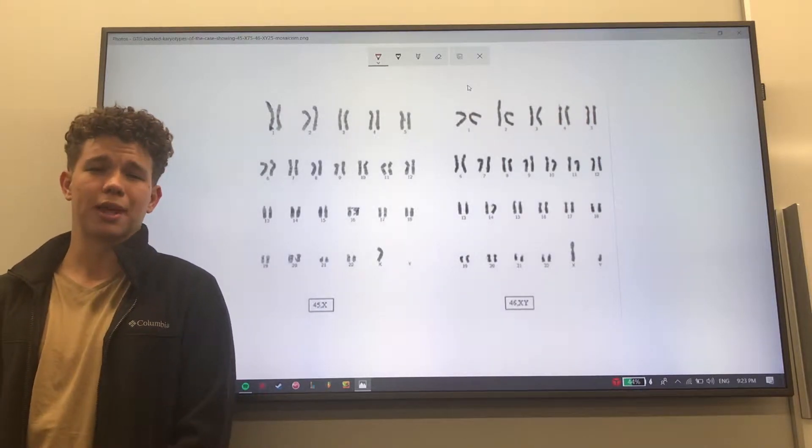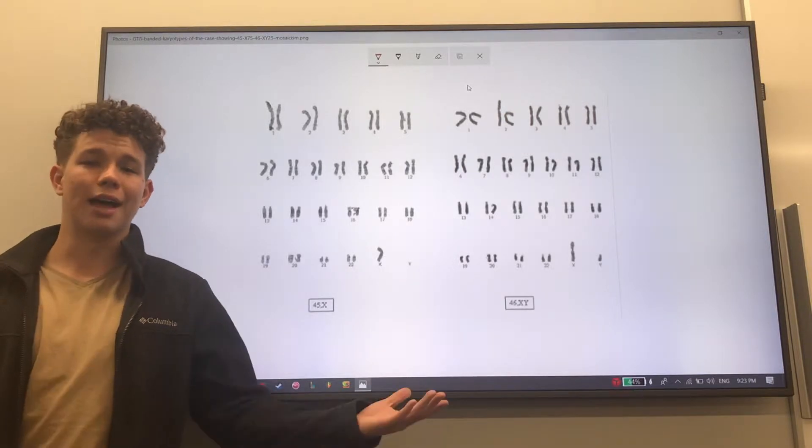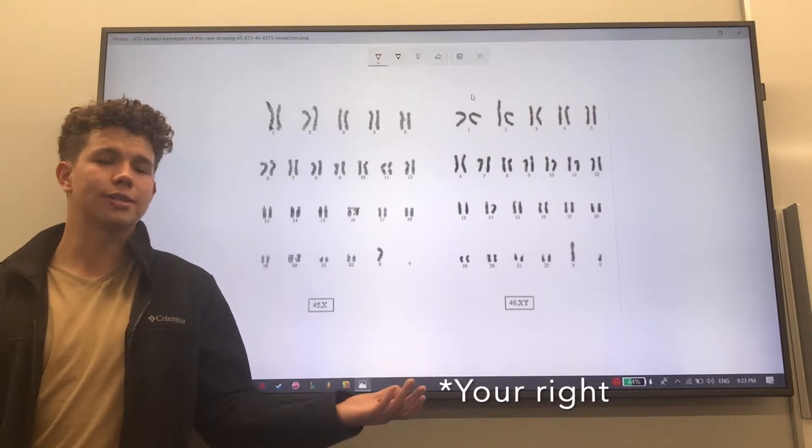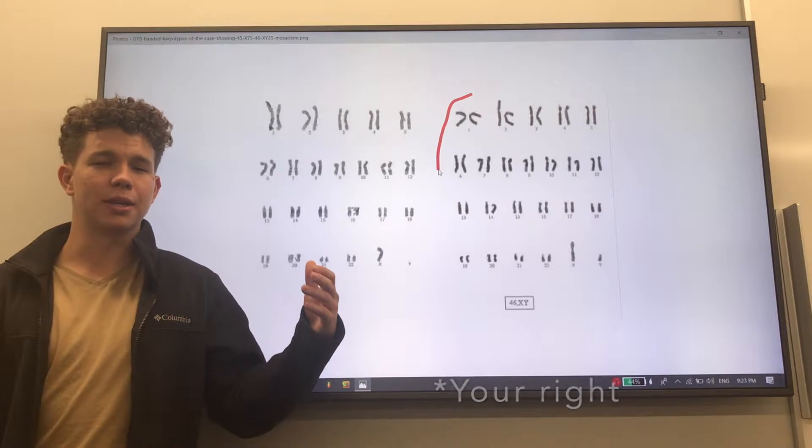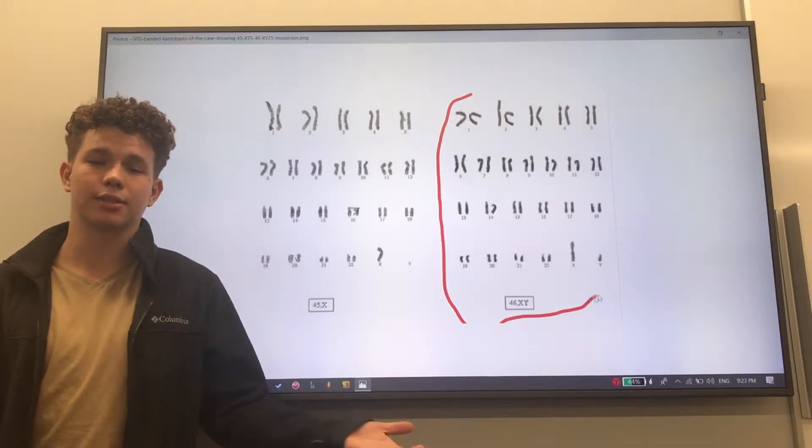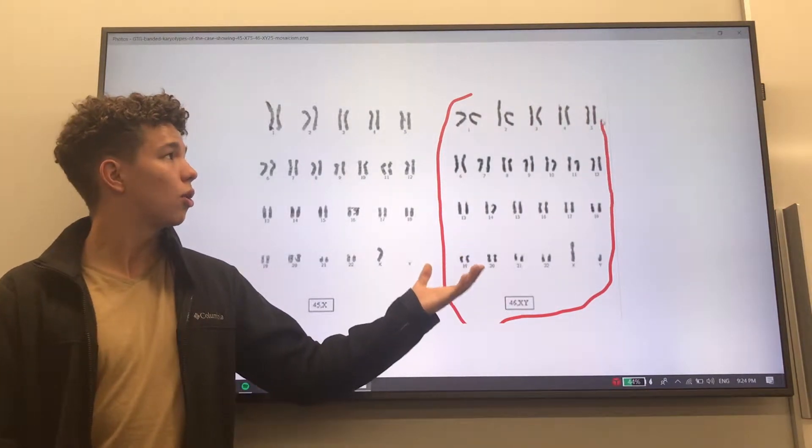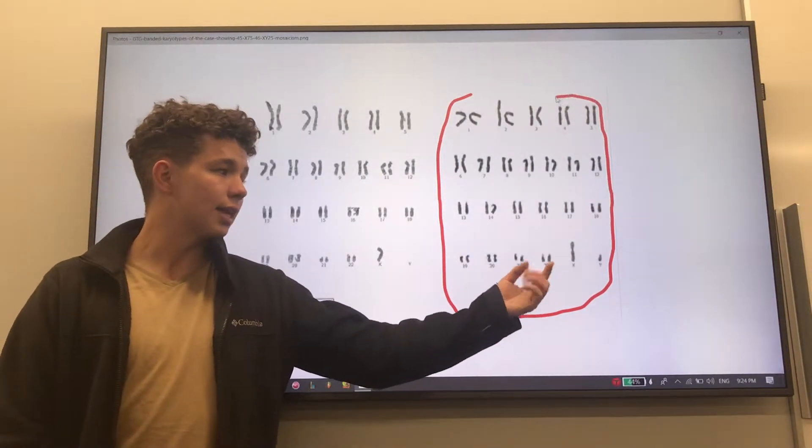Now in order to explain this we're displaying two different karyotypes. On the left we have a karyotype for what would be normally a genetically male individual's cells. So we can see 22 pairs of chromosomes and then an X and a Y.